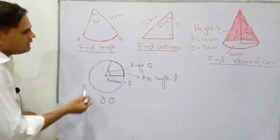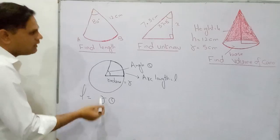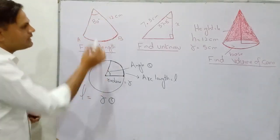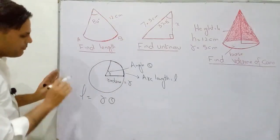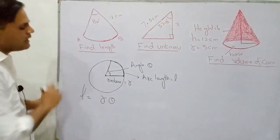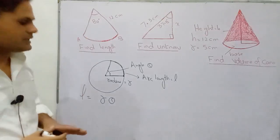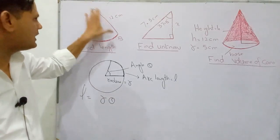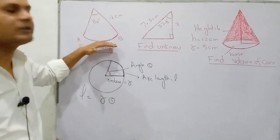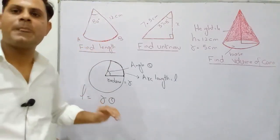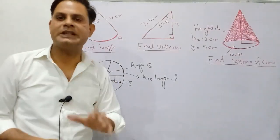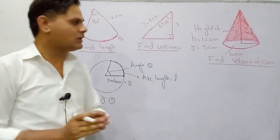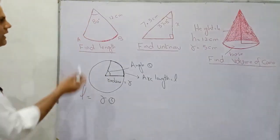L is the arc length, R is the radius, and theta is the angle. Put the values given in the diagram and find the remaining one. Sometimes you need to find the value of theta, the radius, or the arc length. Use this formula — it involves three quantities; two are given and one is unknown.